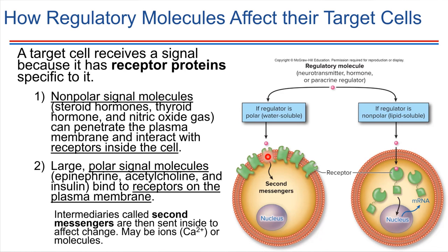On the other hand, if the signal molecule is nonpolar, that implies it's able to cross the plasma membrane. In that case, the signal molecule might actually diffuse directly across the plasma membrane, and its receptor could actually be inside of the cell. So there are two different styles of receiving signals, depending on what type of chemical molecule the signal is.